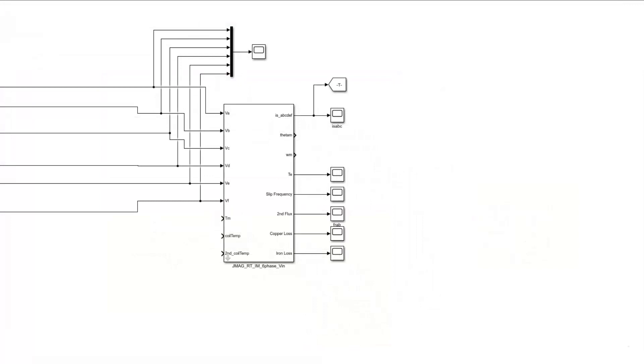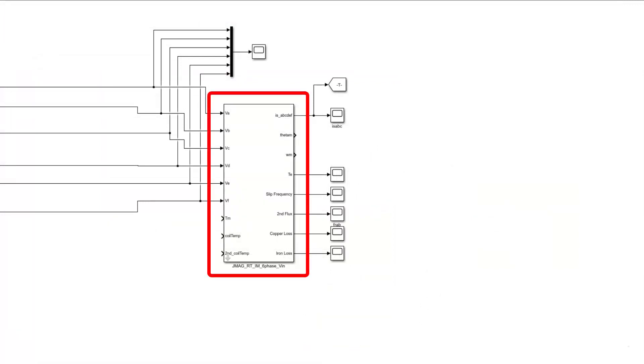In MATLAB Simulink, connect the JMAG-RT model block, then specify the created RTT file and motor parameters.